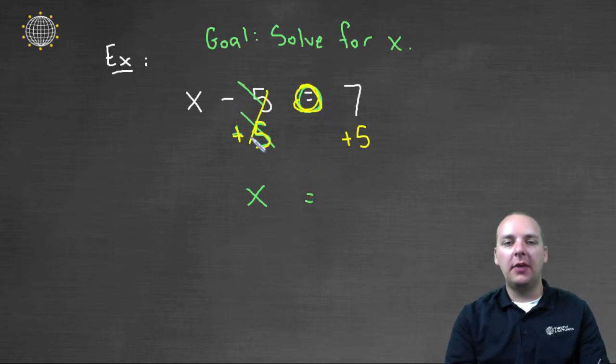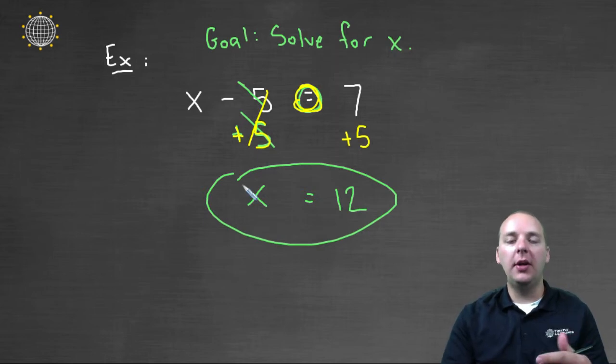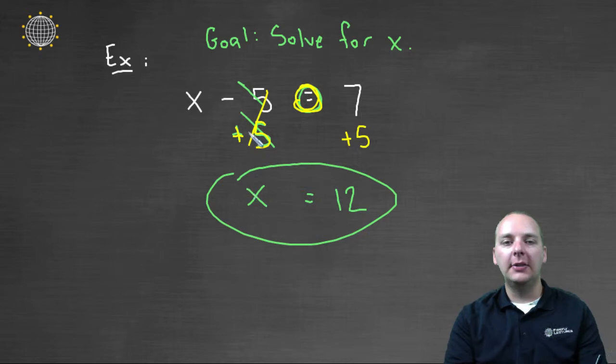so that this equality is maintained. So minus five plus five cancel, and seven plus five gives you twelve. So here we solved the linear equation by using this addition property to get rid of our minus five.